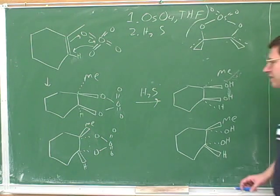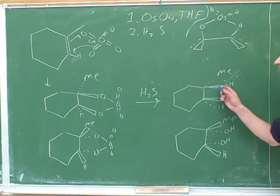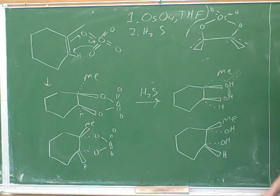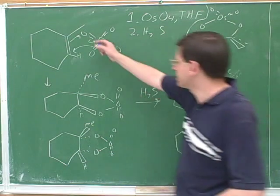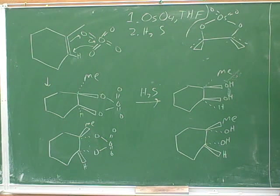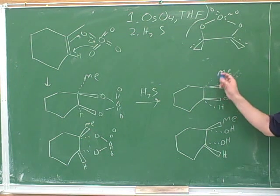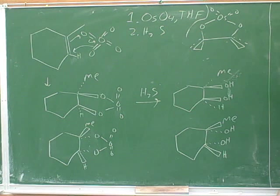We should have two different products because the oxygens could have come in from in front or from behind, but either way they have to be syn because they're coming in from the same osmium tetroxide. Then we have to ask whether these are the same or different. These are clearly different because the molecule is asymmetrical — it's got the methyl up here and the hydrogen down here. There's no way to lay one of these pictures on the other, so we would have to draw both.